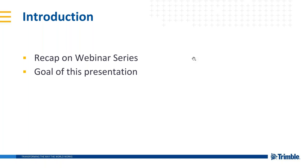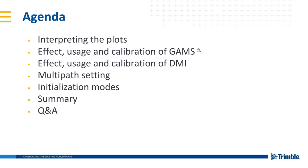This series is a follow-up to that one, so we will keep talking about POSPAC. All of the webinars so far have discussed accuracy — that has been the main topic of the first four webinars. The goal of this presentation is to help you understand how to make the best choices in POSPAC. We are going to talk about different aiding sensors like GAMS and DMI and some settings, and we want to help you understand the effect of different settings and sensors.